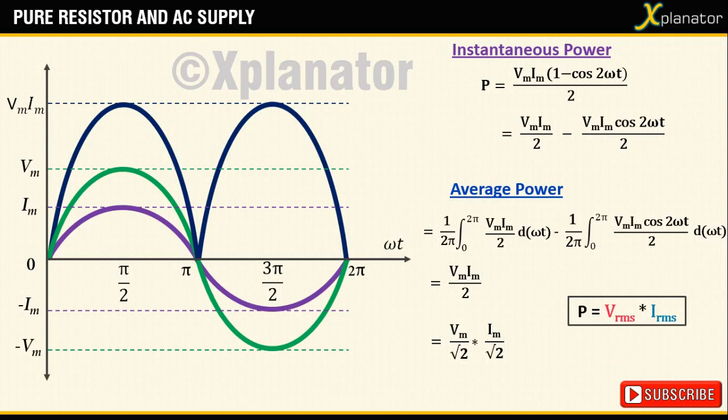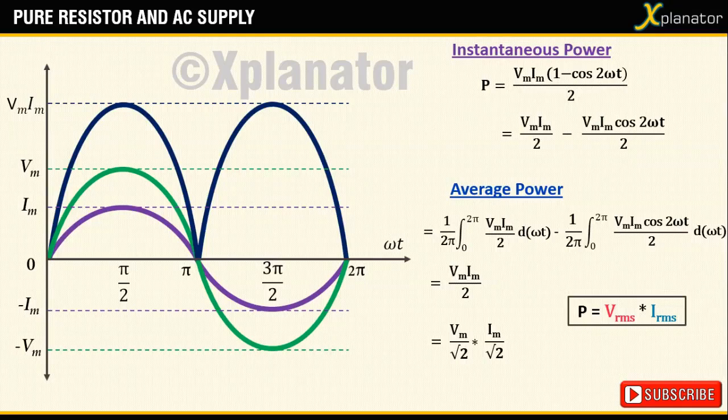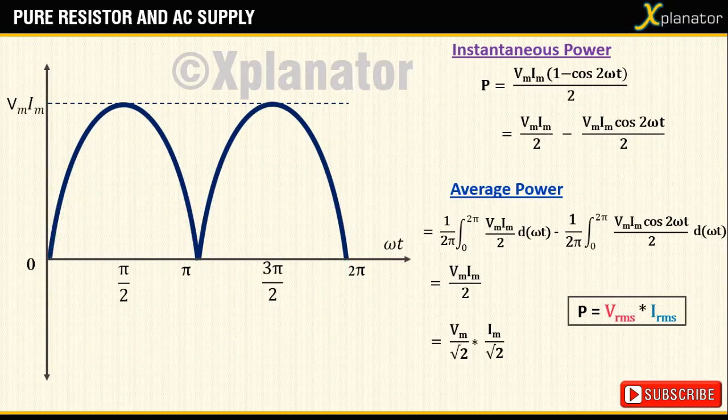Moving over to the graph, the plot which we have drawn is for instantaneous power. The average power is constant and of the magnitude vm im divided by 2.